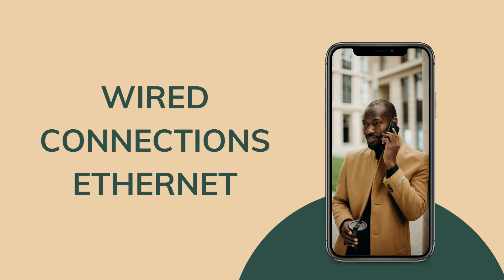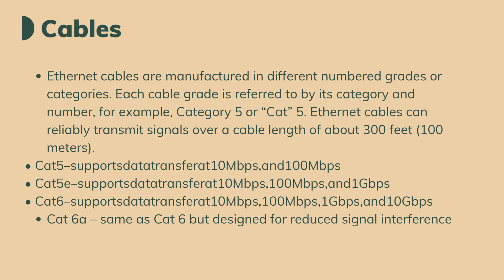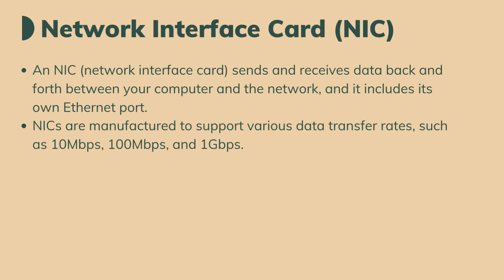In these slides, we will learn about the differences between Ethernet and Wi-Fi. Ethernet — a wired connection to a LAN — is called an Ethernet connection because it uses a networking cable called an Ethernet cable. Using a wired connection provides the fastest and most secure connection possible within the LAN. There are Ethernet standards and cables; it's a network cabling protocol for transmitting data across a LAN. You use Ethernet cables to connect computers and other devices. The network interface card sends and receives data between your computer and the network, and it includes its own Ethernet port. It supports 10 Mbps, 100 Mbps, and 1 Gbps.